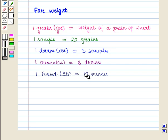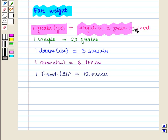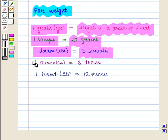Below you can see apothecary measure equivalents for weight. Here 1 grain is equal to weight of a grain of wheat, 1 scruple is equal to 20 grains, 1 dram is equal to 3 scruples, 1 ounce is equal to 8 drams, and 1 pound is equal to 12 ounces.